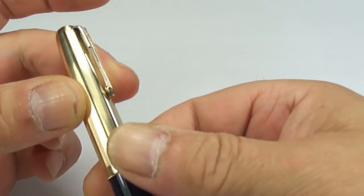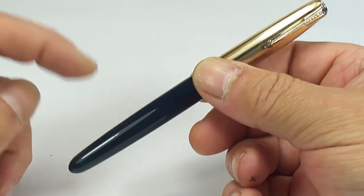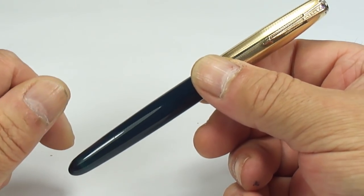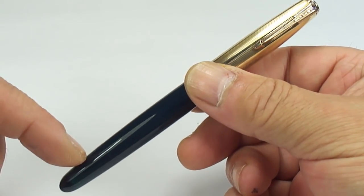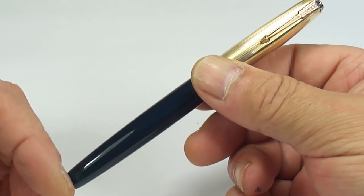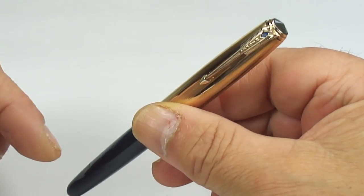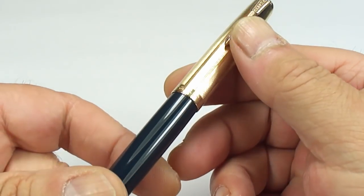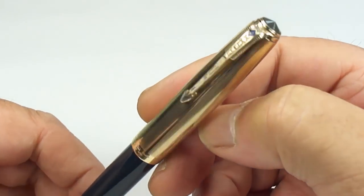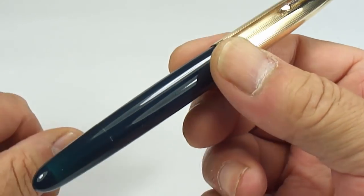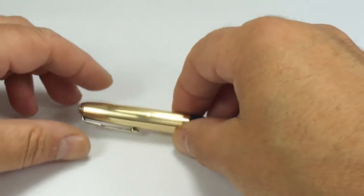We'll put the cap back on. And there we have it. A lovely example of a Parker 51 Vacumatic, Mark 1, with this plastic plunger. Blue diamond cap, 1 in 10, 14 karat gold filled cap, in gorgeous condition, in cedar blue.